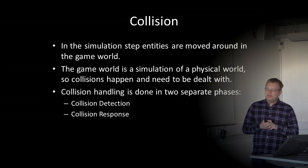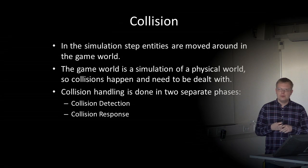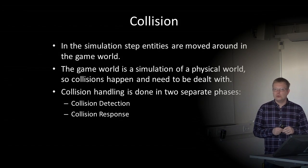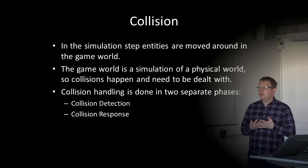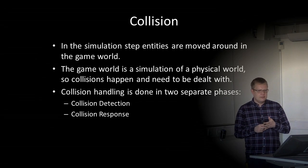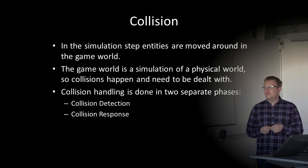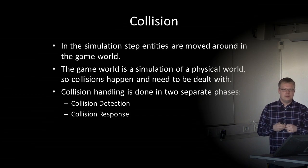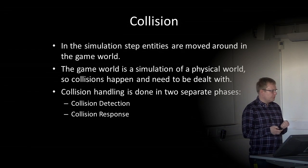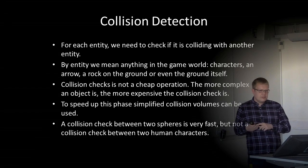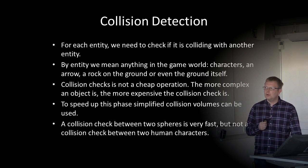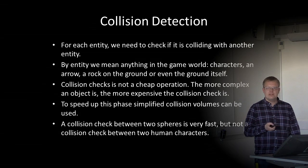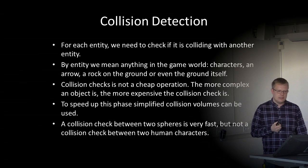In the simulation step, entities move around the game world with speed and direction, encountering obstacles like walls and trees. Since the game world simulates a physical world, we need to deal with collisions. Collision handling is done in two separate phases: detecting a collision and responding to it. Collision detection is a costly step. For each entity, we check if it is colliding with another entity — which can be anything in the game world: characters, arrows, bullets, rocks, or even the ground. The more complex an object, the more expensive the collision check.